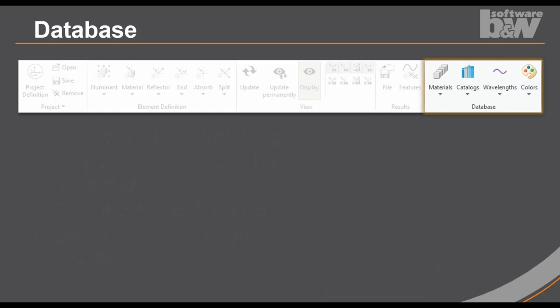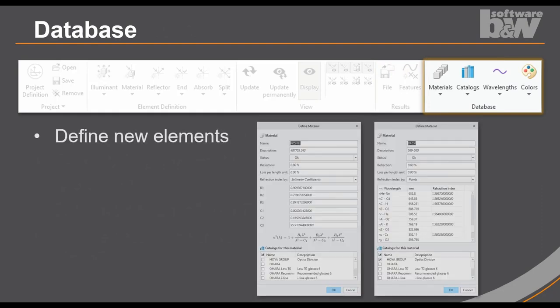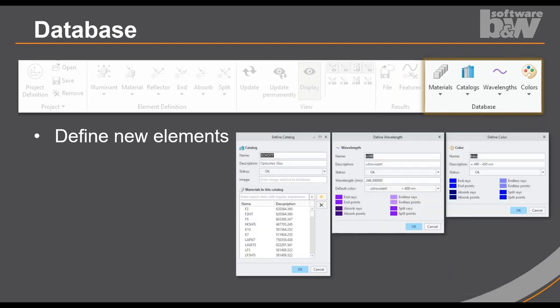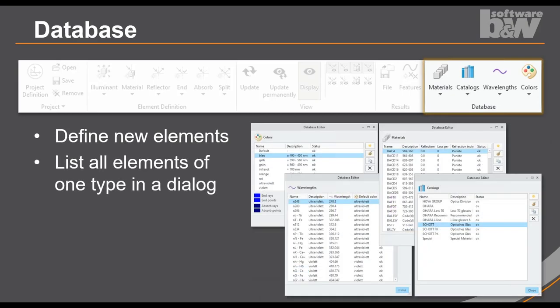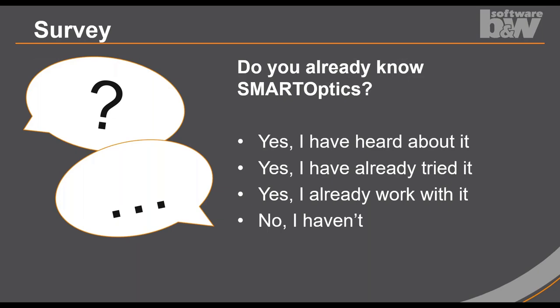The last group is the database group. Define your elements here. You can define the materials or catalogs, wavelengths, and colors. Now, although here we have a dialogue with a list of all elements and you can customize the database to your needs.